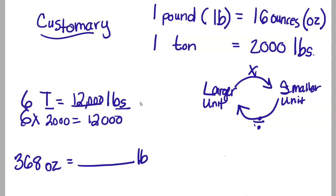In our next example, we're going to take 368 ounces and convert it to pounds. So we're going from a smaller unit to a larger unit, so we're going to use division. And I'm going to ask myself, how many ounces are in a pound? I know there's 16. So my 368 ounces will now be divided up into groups of 16.